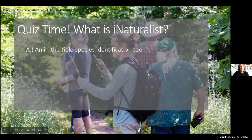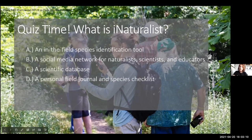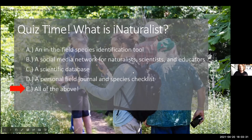Quiz time — what is iNaturalist? Is it A, an in-the-field species identification tool? B, a social media network for naturalists, scientists, and educators? C, a scientific database? D, a personal field journal and species checklist? Or E, all of the above? The answer is E. This is just a quick introduction to some of the things iNaturalist can do — it can do all of these things. You don't need to use all of these features, but it's nice to know they're available.